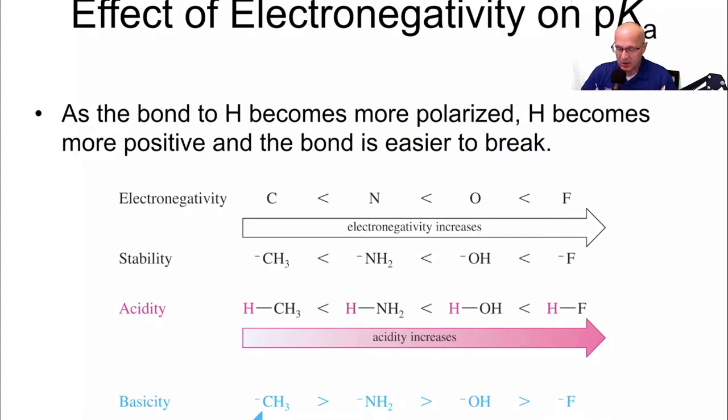As the bond to H becomes more polarized, H becomes more positive, and the bond becomes easier to break. Fluorine is more electronegative than oxygen. F minus is more stable than OH minus as an anion. OH minus is more stable than NH2 minus. NH2 is more stable than CH3 minus.